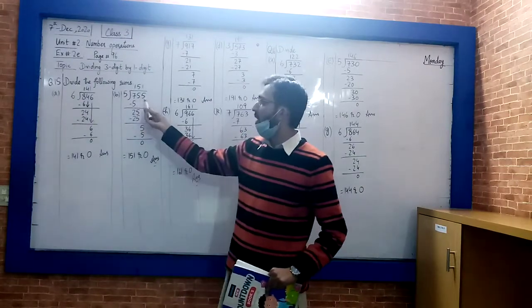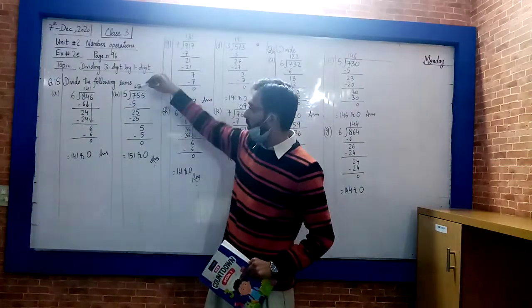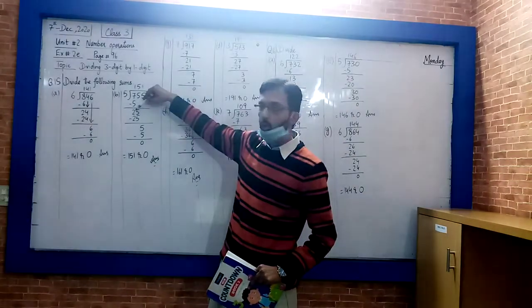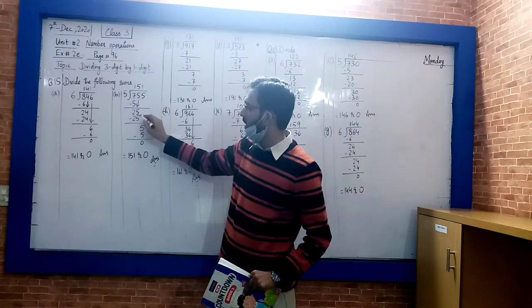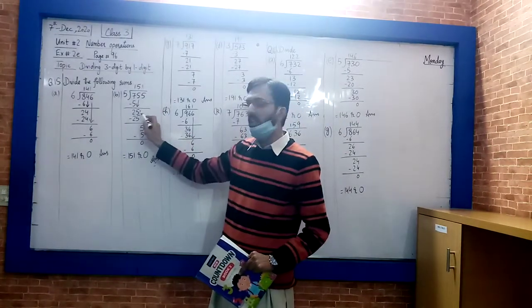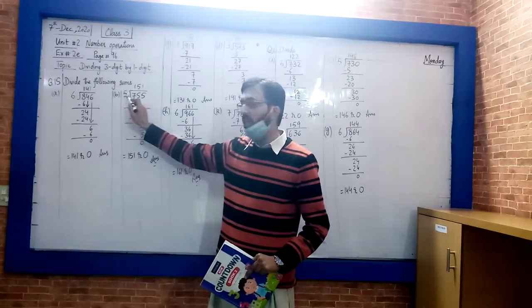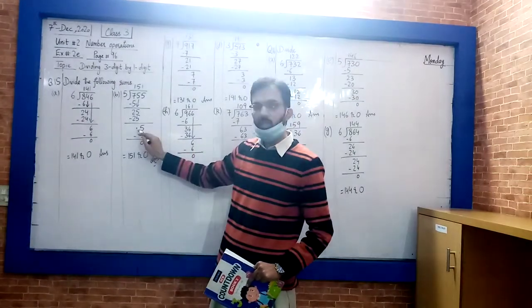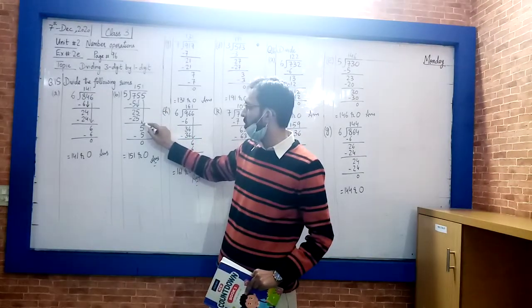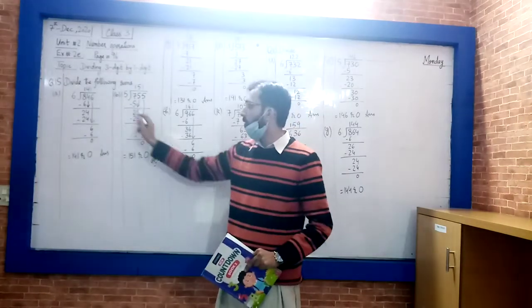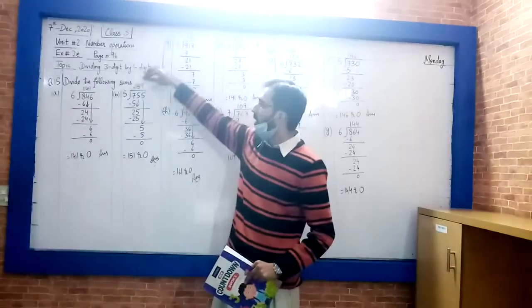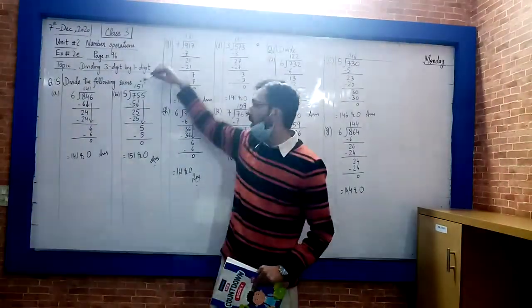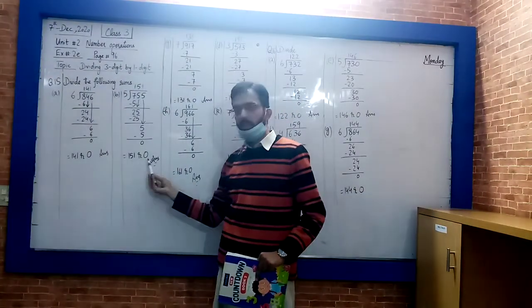Next, part B: 755 divided by 5. 5 into 7 goes 1. 7 minus 5 is 2. Next digit comes down, so this is 25. 25 divided by 5 is 5. 5 times 5 is 25, minus is 0. Now 5 comes down to this position. 5 divided by 5 is 1. So the answer is 151, remainder 0.